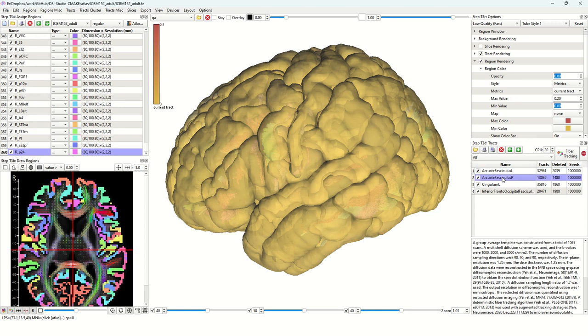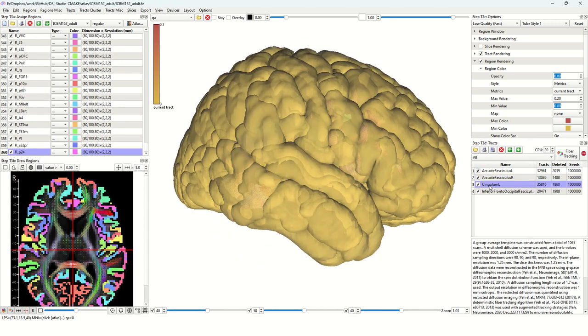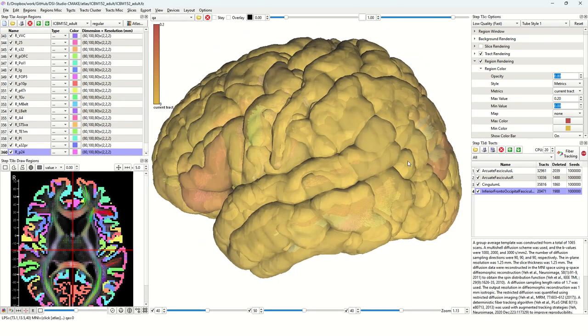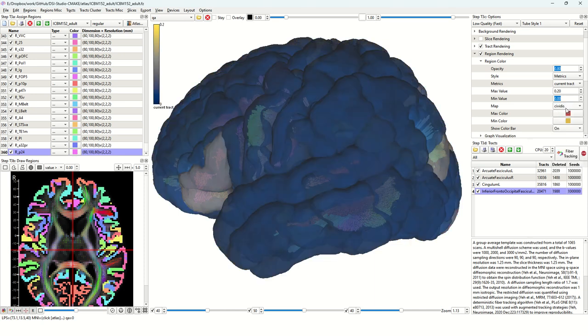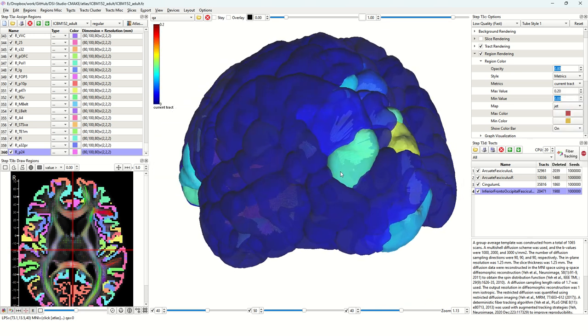If you select the second one, the right-hand side, you'll see the right-hand side showing up. Cingulum or inferior frontal-occipital fasciculus, you can visualize the track here. Instead of showing different colors, you can have a color map. There are some built-in color maps ready to use for visualizing the connectivity based on your preference.